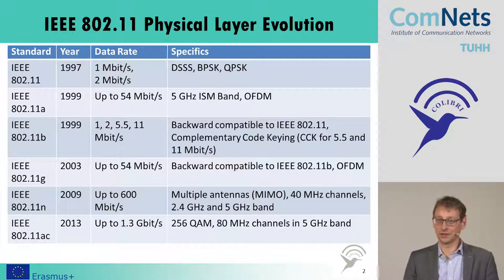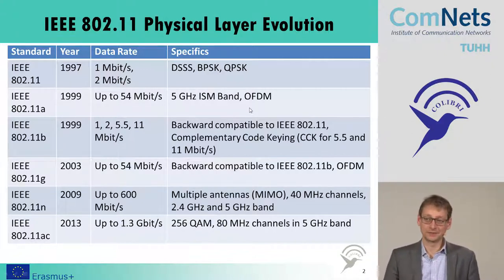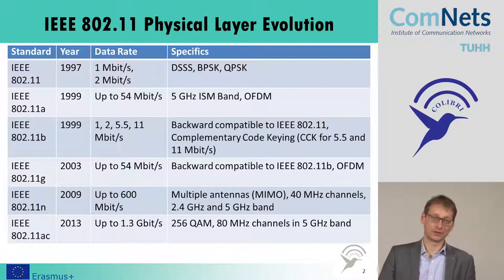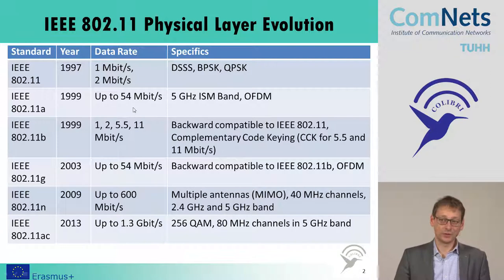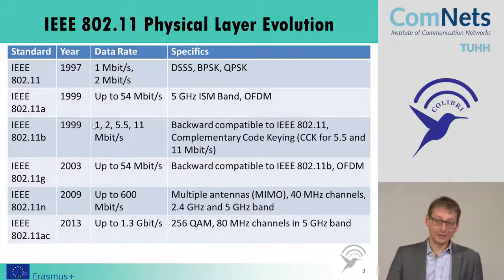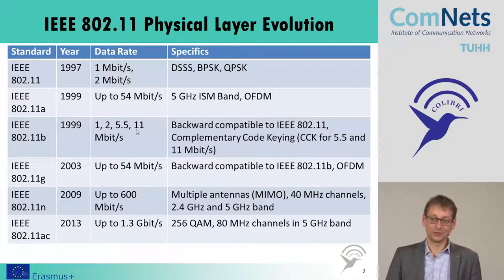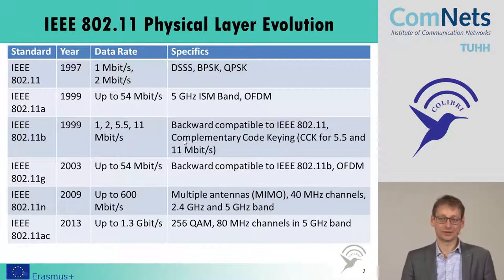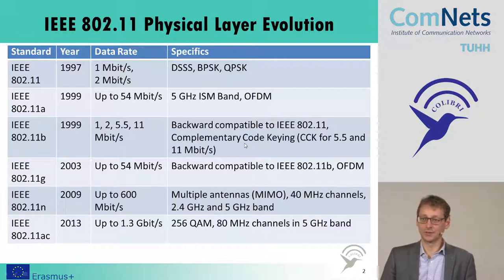We discussed OFDM in the basics of the course. It is orthogonal frequency division multiplexing, and we use orthogonal frequencies to transmit at high data rates on different frequencies simultaneously. With this we can reach up to 54 megabit per second. By the way, this was taken from the European approach to HyperLAN and was translated to the 802.11 standard. In the same year, an improvement — 802.11b — was also introduced, going up to 11 megabit, backward compatible to the legacy standard on the same 2.4 GHz frequency band, using a complex complementary code keying scheme for 5.5 and 11 megabit per second data rates.